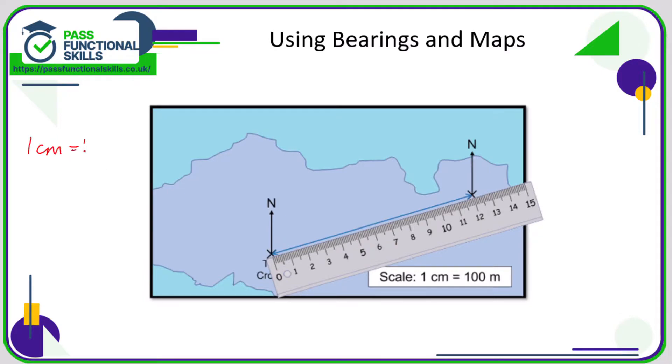So if 1 centimeter is 100 meters, then 12 centimeters is going to be 100 meters multiplied by 12, and that is therefore 1200 meters. So in real life that is a distance of 1200 meters. Although maybe you'll be asked to give your answer in kilometers, that might be a bit more realistic.